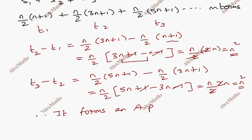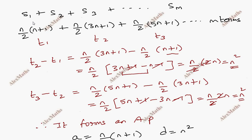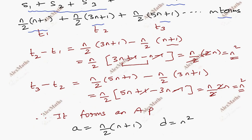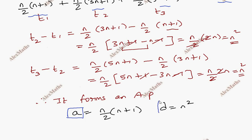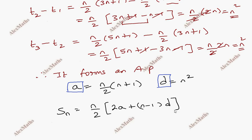The first term a equals n by 2 into n plus 1, and the common difference d equals n squared. We need to calculate s1 plus s2 plus s3 up to sm — that is the sum of m terms using the AP sum formula: sum equals n by 2 into 2a plus n minus 1 into d. We will have m terms.